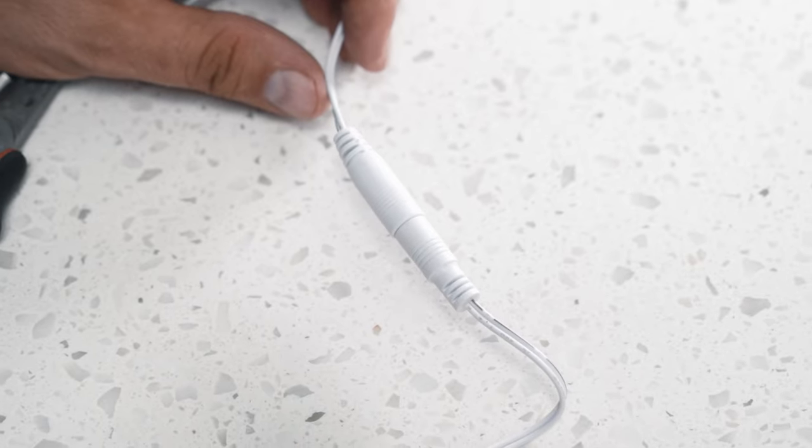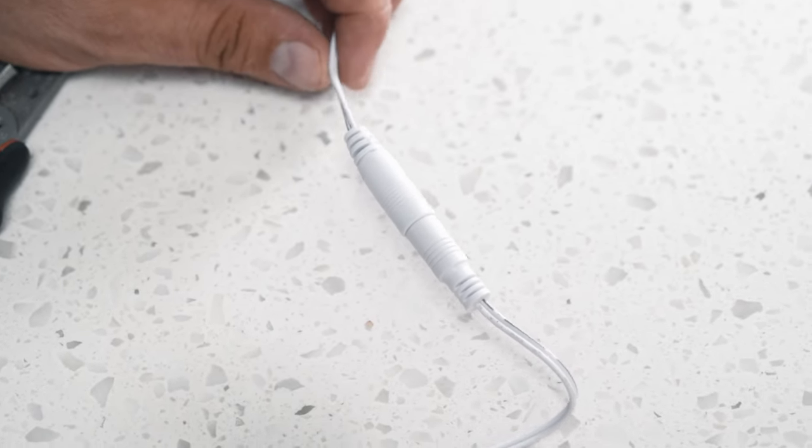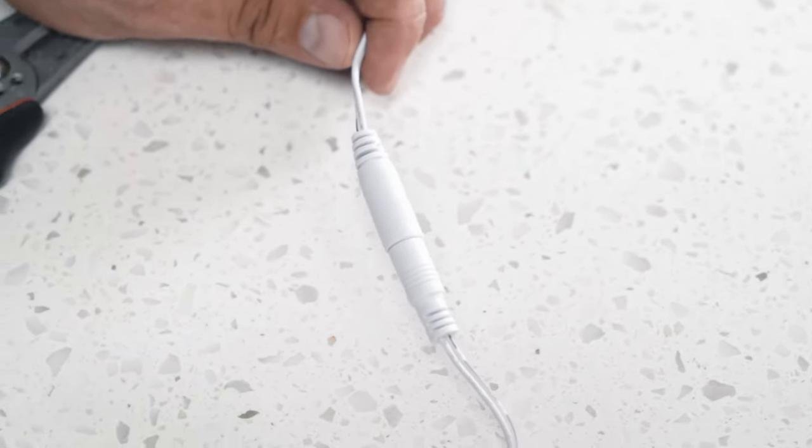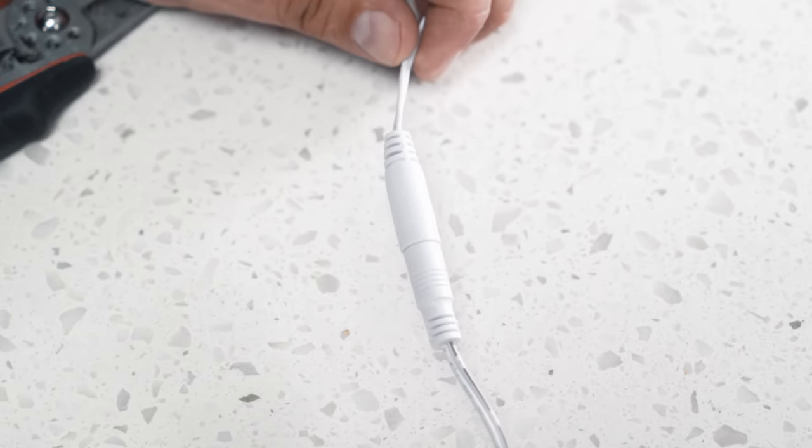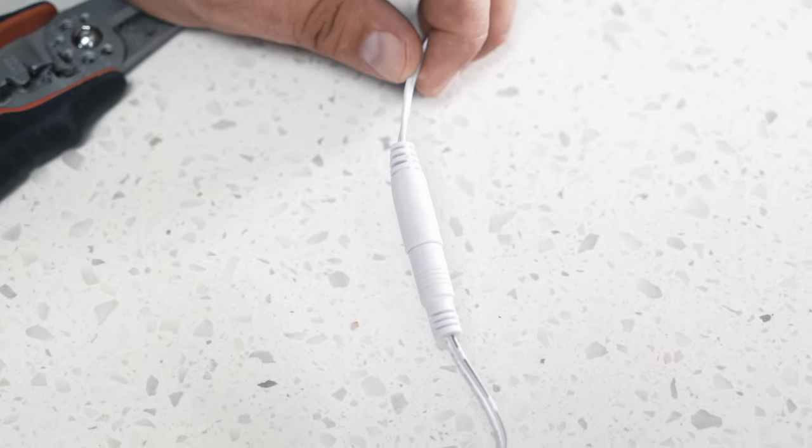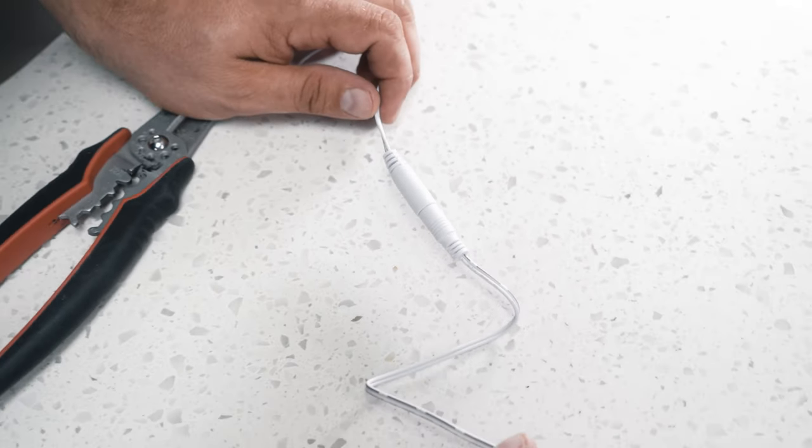Now that we have the puck lights mounted, let's talk about the power wires. These come in either 12 or 24 volt DC. They can't go directly to the AC. They do need a power supply. If you want to check out our video on power supplies, you can check that out here.